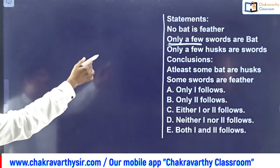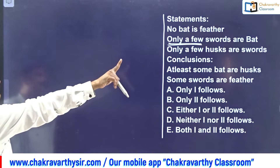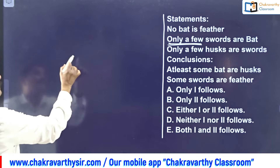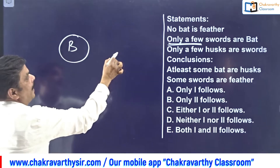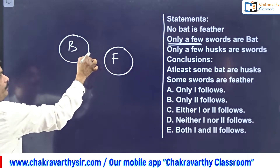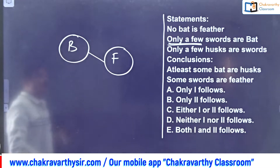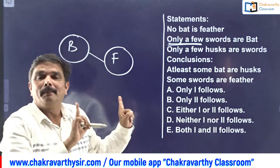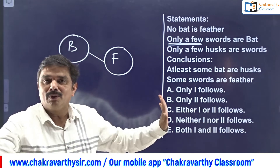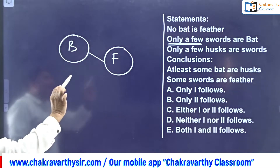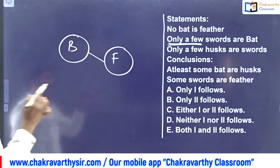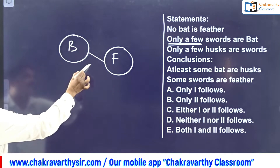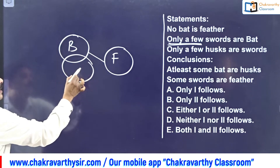No bat is feather - forget about grammatical rules. B and F should not match with each other. Now go for the next statement: Only a few swords are bats. You should be very careful here - only a few. What's the difference between 'some' and 'only some' or 'few' and 'only few'?